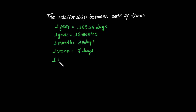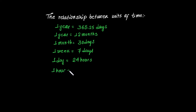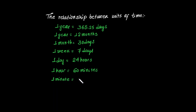One day has 24 hours. One hour has 60 minutes. One minute is equal to 60 seconds.